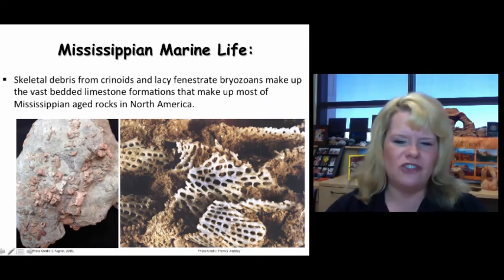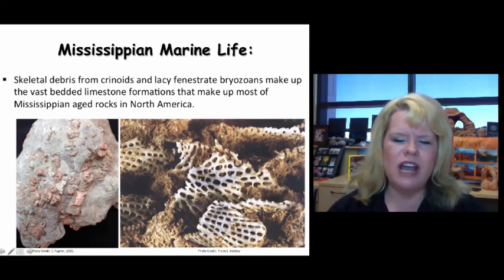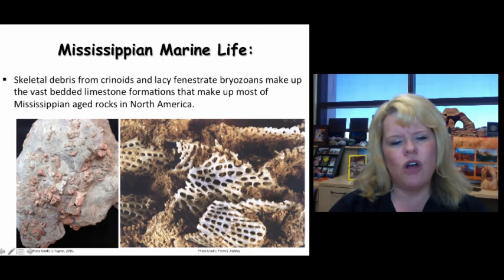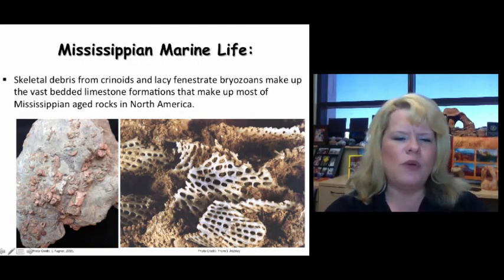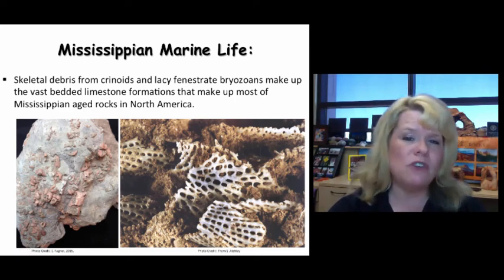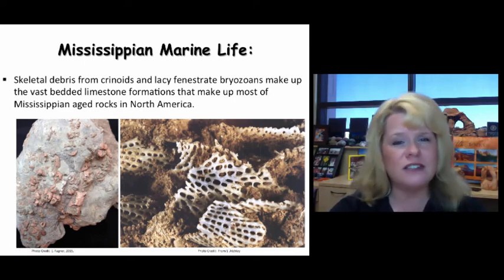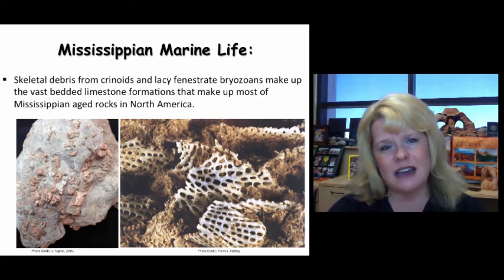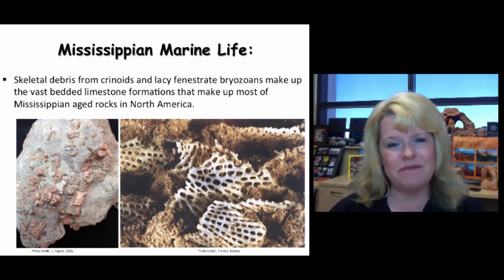This is a lacy fenestrate bryozoan, very common during the late Paleozoic especially during the Mississippian, and these are crinoid fragments found in rock material. We find these types of fossils very prevalent in most Mississippian aged carbonate rocks — from early to middle Mississippian, before it transitions to more sandy-like sediments at the end of the Mississippian.